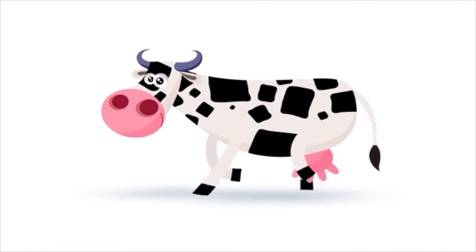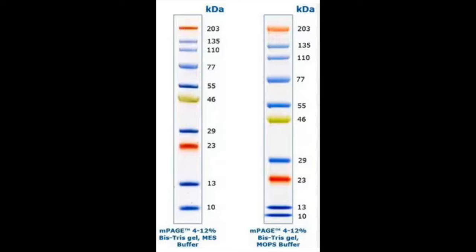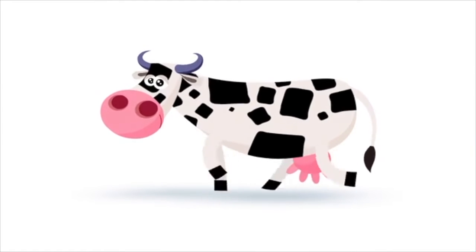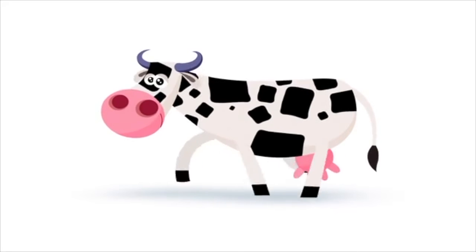Bovine serum albumin is often used as a protein standard if you are doing any kind of assay that requires you to have a known molecular weight protein. It's often used as a blocking agent to prevent non-specific binding of antigens and antibodies when we're doing ELISAs or when we're doing any kind of membrane binding of our proteins so that we can probe for a specific protein, so in western blots as well.